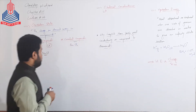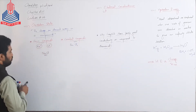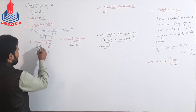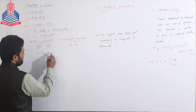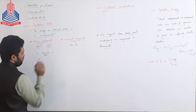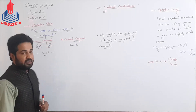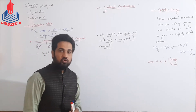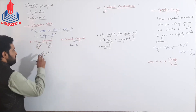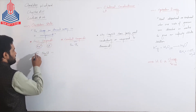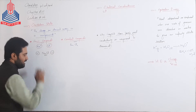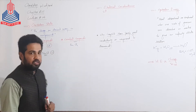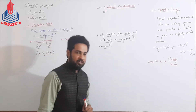For example, Sodium Chloride میں Sodium ion کے اوپر charge ہے plus one، اور Cl کے اوپر charge ہے minus one، تو NaCl compound میں ان کی Oxidation States بھی plus one اور minus one ہوں گی respectively.